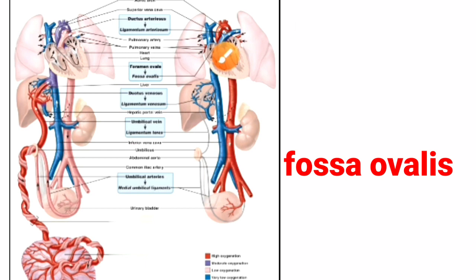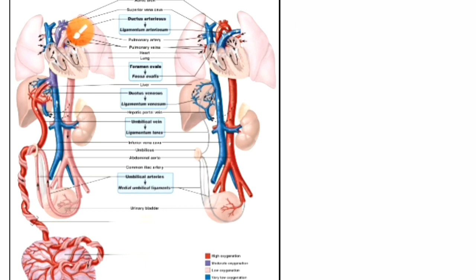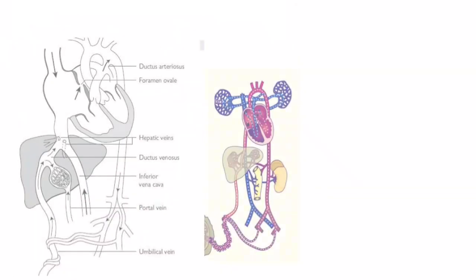Finally, closure of the ductus arteriosus occurs within a few hours of respiration due to increased oxygen tension. Functional closure occurs soon after the establishment of pulmonary circulation, as the muscle wall of the ductus arteriosus contracts and obliterates. Anatomical obliteration takes about one to three months, after which it becomes the ligamentum arteriosum. These are the main changes which occur in the fetal circulation at birth.